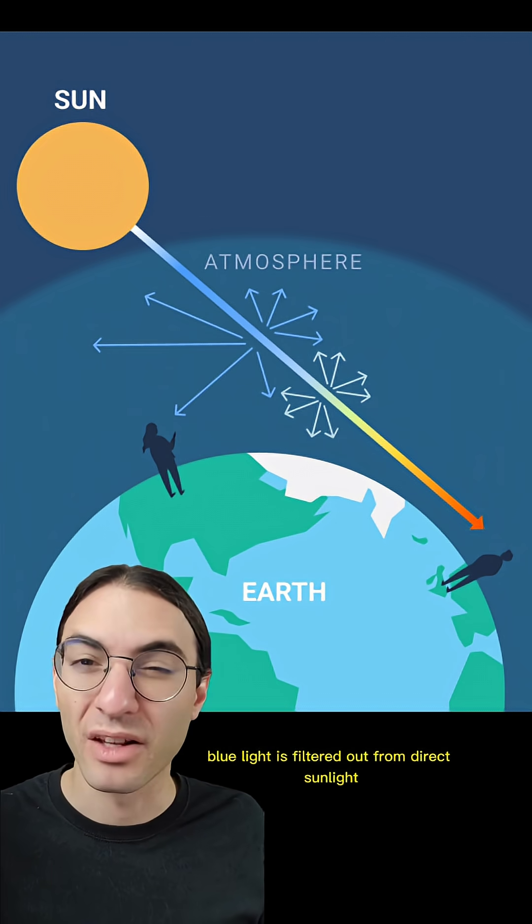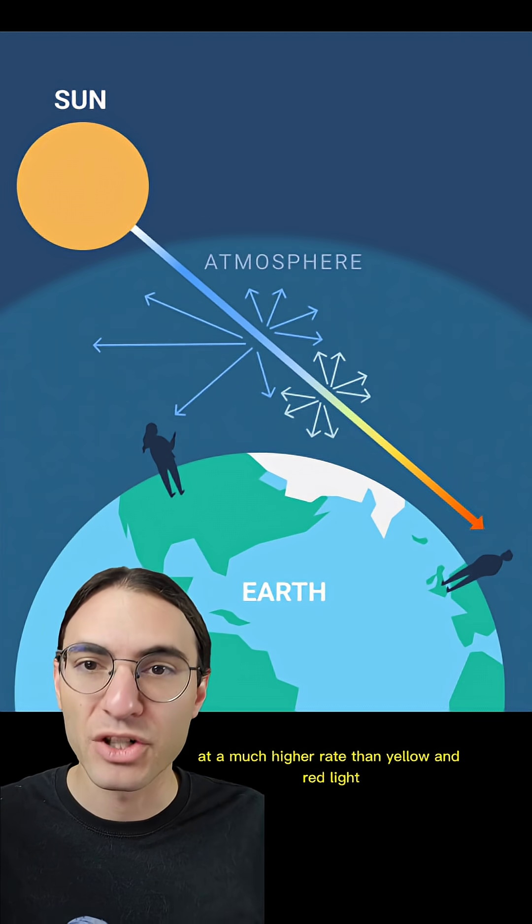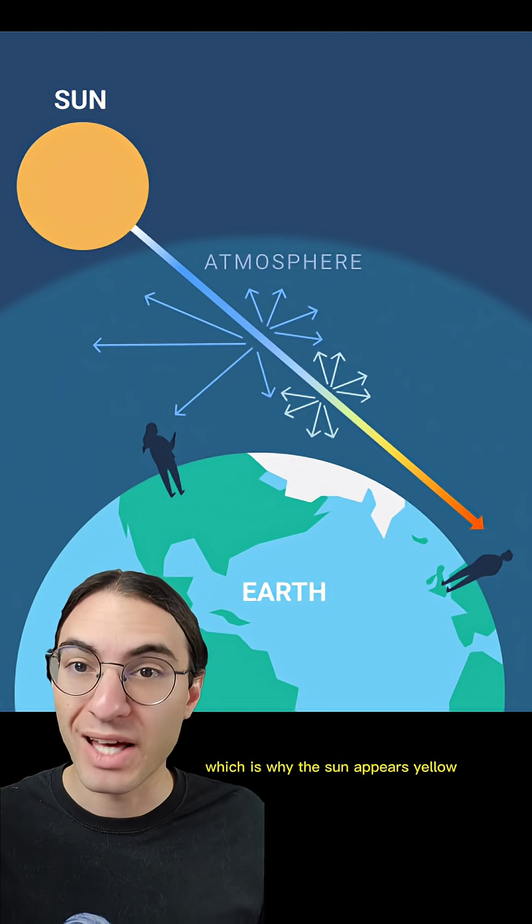For the same reason, blue light is filtered out from direct sunlight because of this scattering at a much higher rate than yellow and red light, which is why the sun appears yellow.